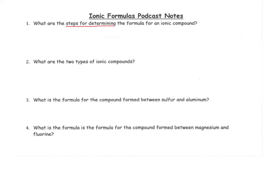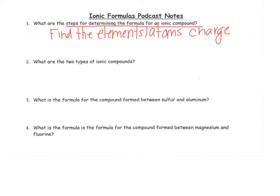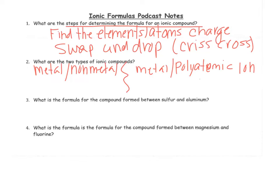The steps to determining the formula for an ionic bond are first you have to find the elements or that atom's charge. You have to locate where the charge is, basically where it is on the periodic table. And then you need to take the charge and swap and drop the charges. We call that crisscross. You've got to crisscross your charge. I'll demonstrate this here in a minute.